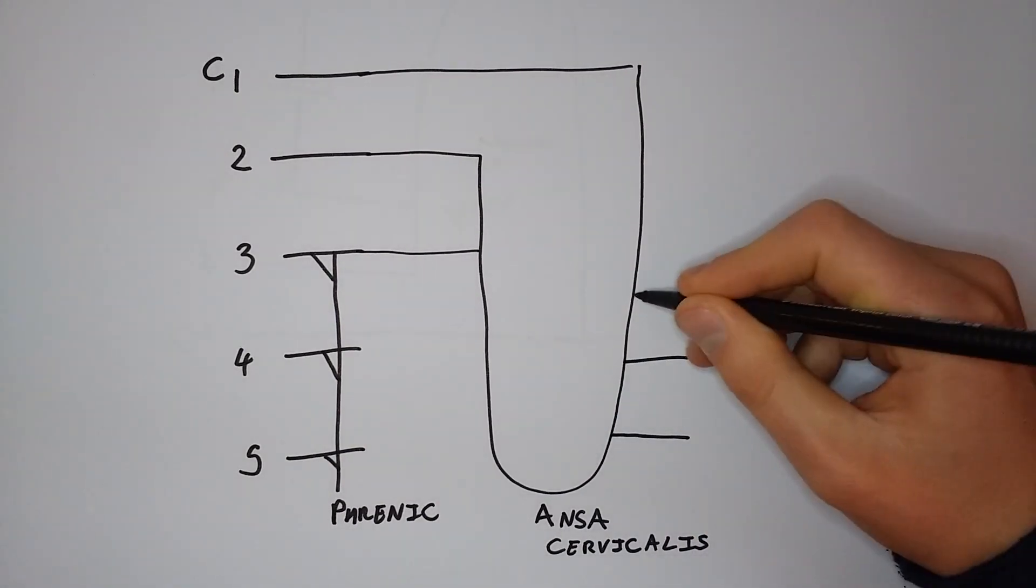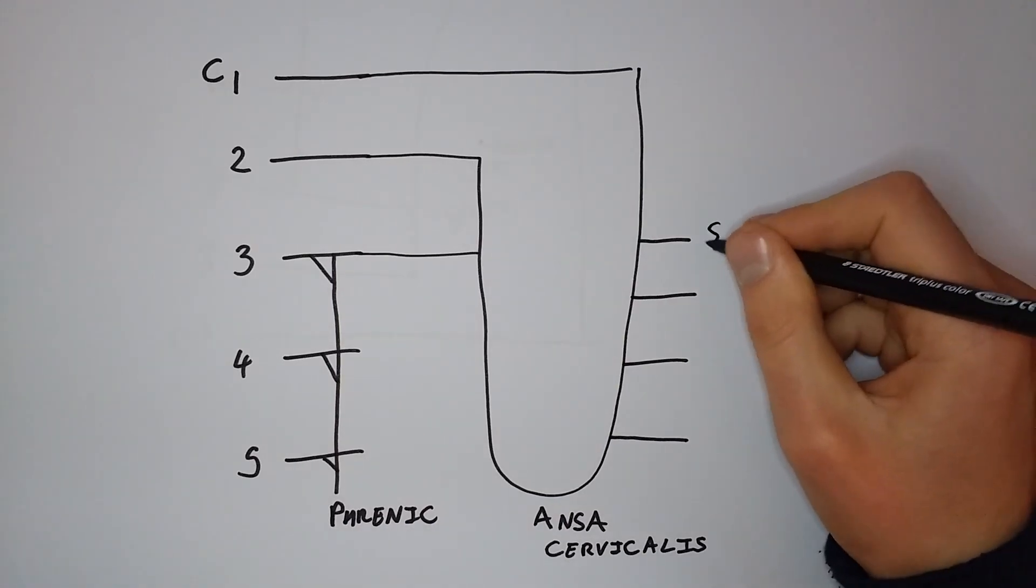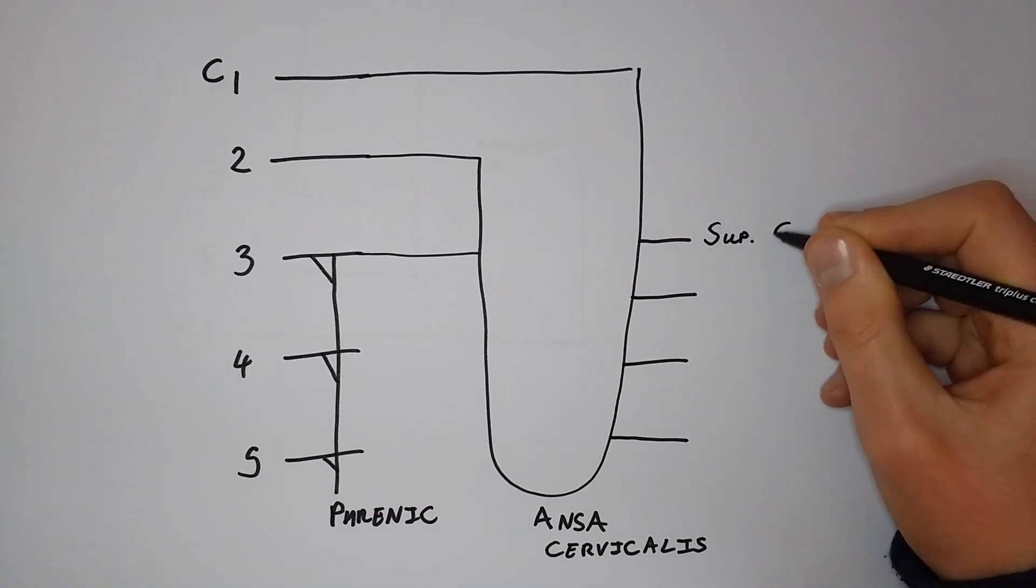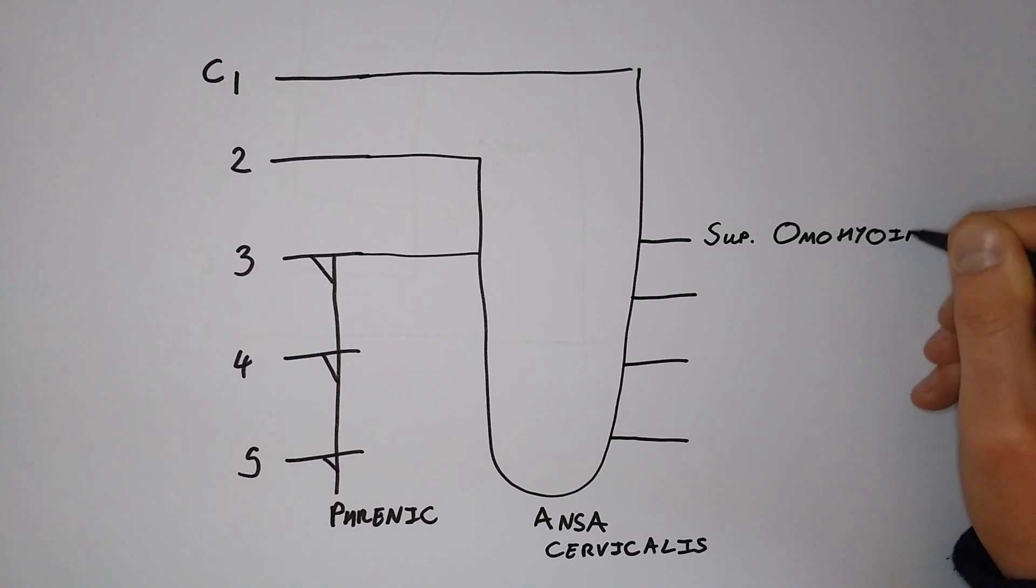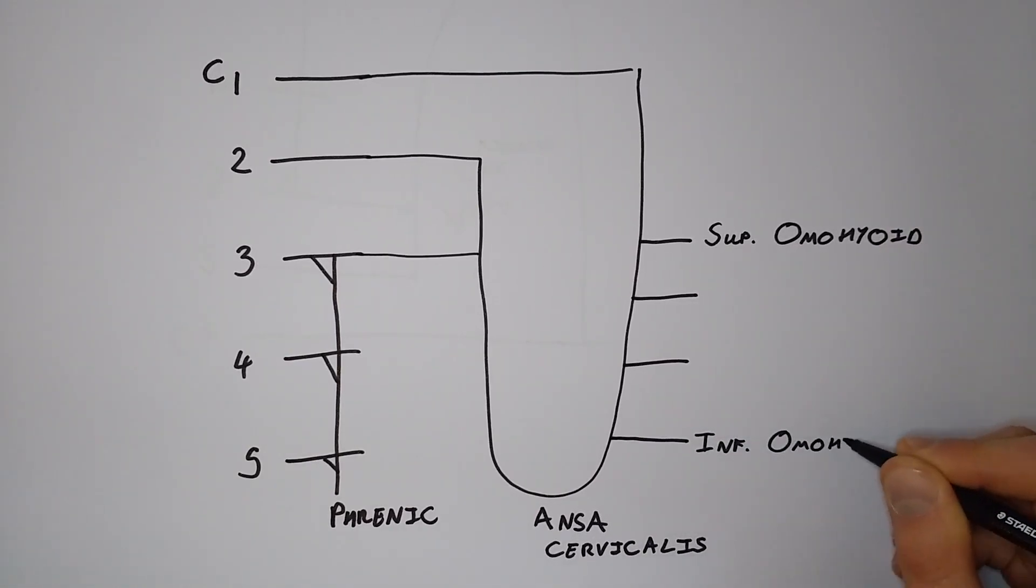There will be four motor nerves coming off of this loop. The superior most is the nerve to the belly of the superior omohyoid muscle. The inferior most is the nerve to the inferior omohyoid belly.